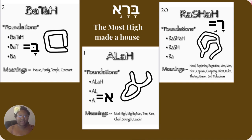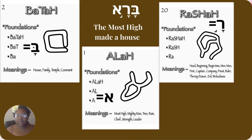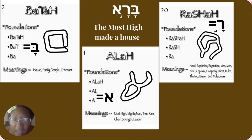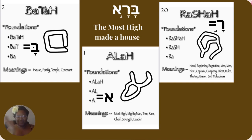And then the next word — it says 'Bata': house, family, temple, covenant. And 'Yaya': most high, mighty man, tree, ram, chief, strength, and leader. And then 'Roshai': head, beginning, time, men, first, captain, company, priest, ruler, the top, poison, evil, and wickedness. Then I put: the most high made a house.